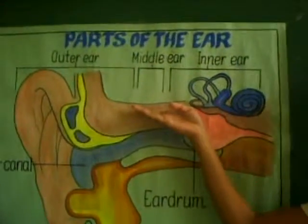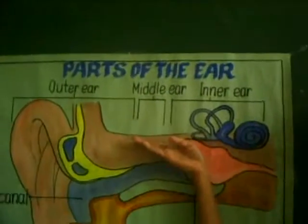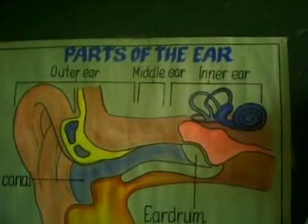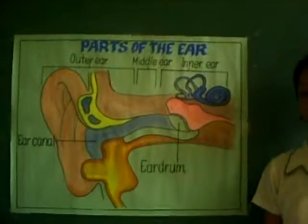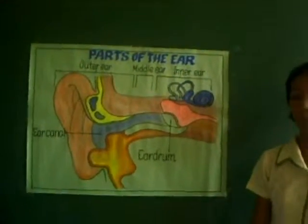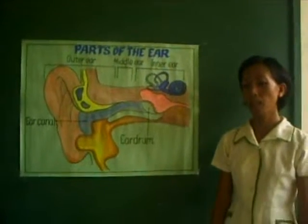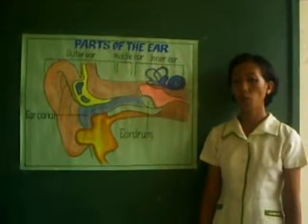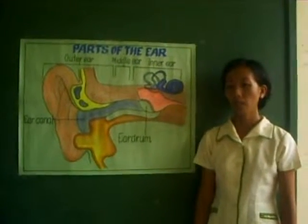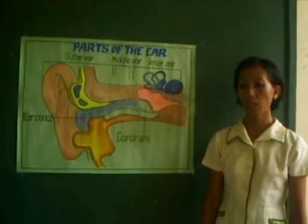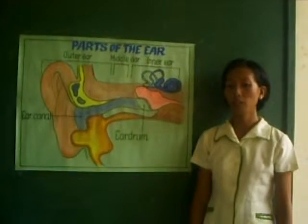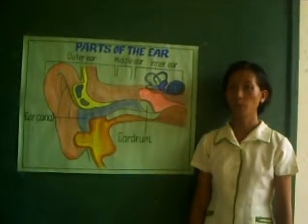The middle ear is a small air-filled cavity within the temporal bone. It is flat laterally by the eardrum and bounded by bony walls with two openings: the oval window and the membrane-covered round window.